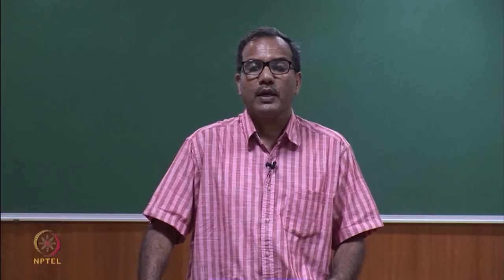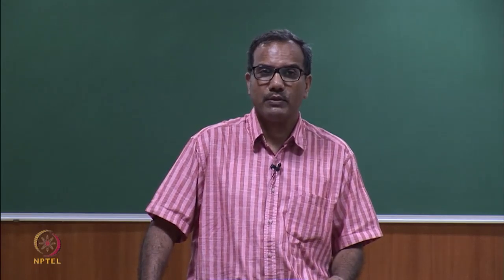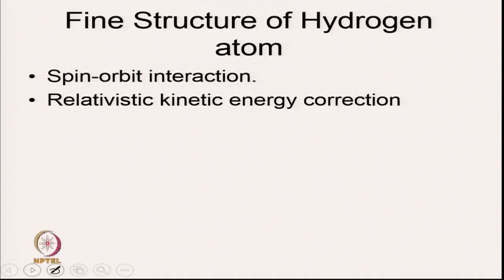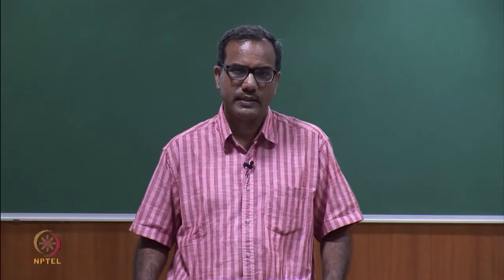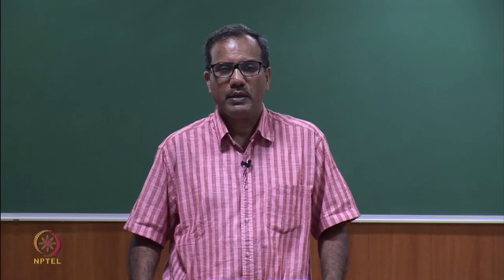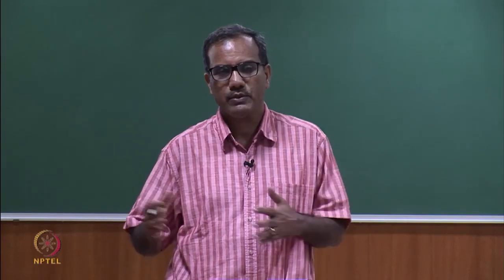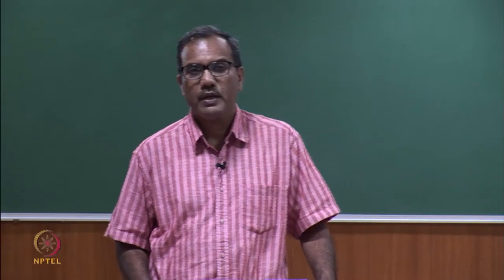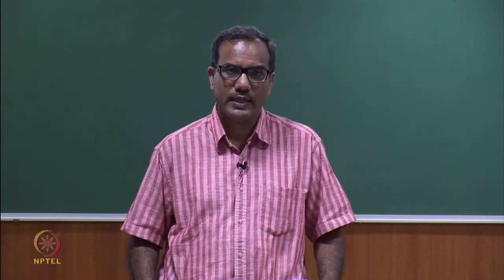If you look at the hydrogen spectra in more detail, you will see splitting of the orbitals, corresponding to a fine structure of the hydrogen atom. The fine structure arises from two things: spin-orbit interaction and relativistic kinetic energy correction. I will not discuss the relativistic kinetic energy correction because that is more related to the exact value of energy, but I will talk about spin-orbit interaction because that leads to splitting of the energy levels.